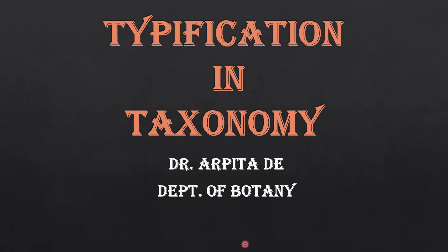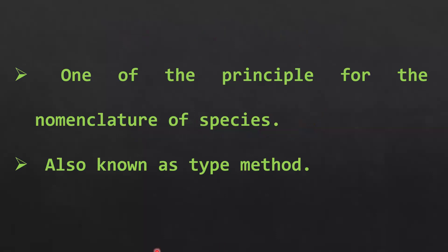Hello everyone, a very warm welcome to my taxonomy class. The topic for today's discussion is typification in taxonomy. We are going to study the different type methods or typification. Typification or type method is one of the principles for the nomenclature of species, intricately related with the procedure of naming a particular species.